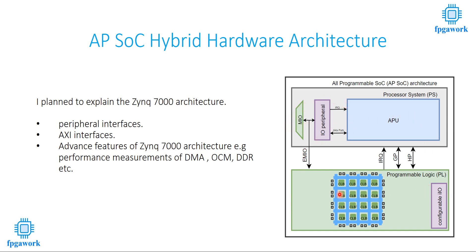I will explain all these components in detail in the next lecture. These are configurable I/Os that you can use. I have divided my lectures into three parts. In the first part, I will explain all the peripheral interfaces — UART, USB, Ethernet, SPI, I2C. In the next part, I will explain AXI interfaces. We have seen the HP and GP ports, which communicate with the PL using AXI interfaces of different kinds: AXI Lite, AXI-4, and AXI Stream. All these will be demonstrated and implemented.